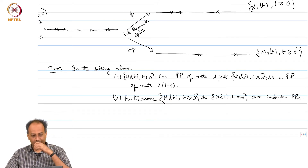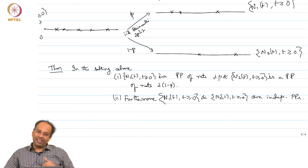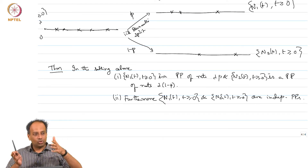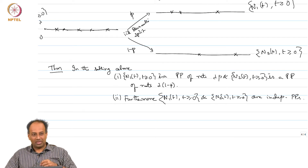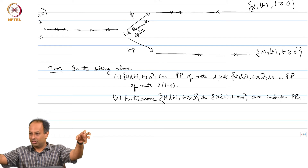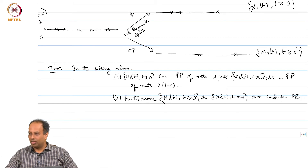The first part — getting rate lambda·p — is fairly straightforward: you are getting lambda arrivals per second and sending fraction p of them up. But what the theorem says is that each split is separately a Poisson process and furthermore these 2 processes are independent, which is absolutely surprising because they come from the same process. If I give you 2 independent Poisson processes of rates lambda·p and lambda·(1 minus p) versus the 2 splits from a single lambda process, you cannot tell the difference.